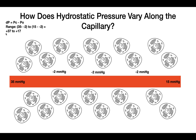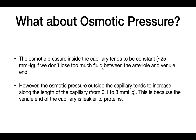At the end of the capillary, the hydrostatic pressure would be plus 17 mmHg, because you do 15 minus (−2), which gives plus 17. So the hydrostatic pressure decreases along the length of the capillary, but it still remains positive.